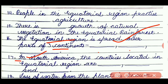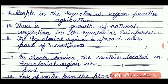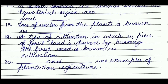Question number 17: in South America, the countries located in the equatorial region are dash, dash and dash. The answer will be Ecuador, Colombia and Brazil. Question number 18: loss of water from the plants is known as dash. The answer will be transpiration.